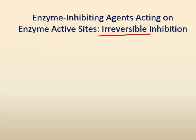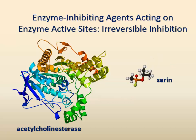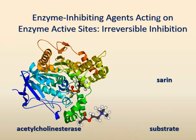With irreversible inhibition, an agent binds to the active site and causes a permanent change in the shape of the active site of the enzyme, so that it can no longer recognize and bind the substrate. Irreversible inhibitors are usually synthetic human-made compounds. A good example of an irreversible inhibitor is the agent known as sarin, or nerve gas. Sarin binds to the active site of an enzyme in the nervous system known as acetylcholinesterase. This binding causes the formation of a covalent and permanent bond between the amino acid residue serine of the enzyme and sarin, thus irreversibly blocking the activity of the enzyme.